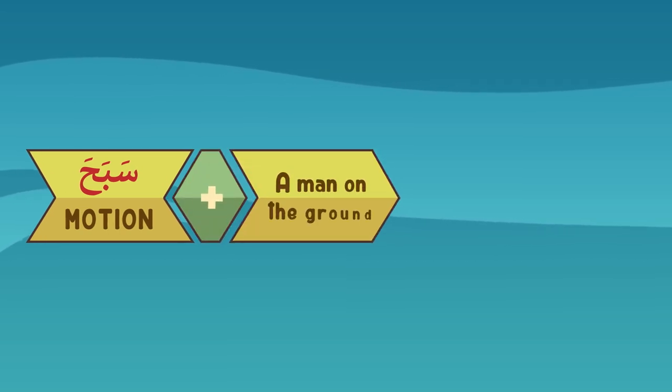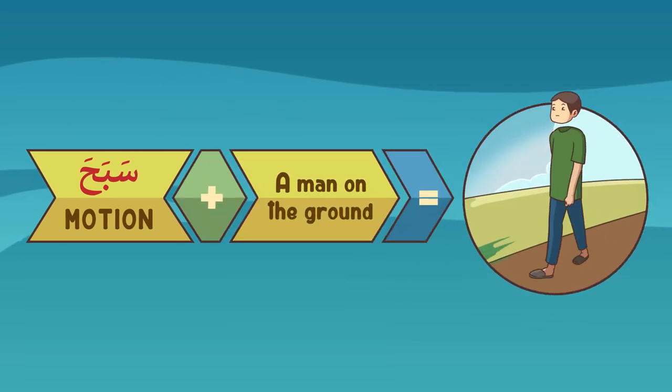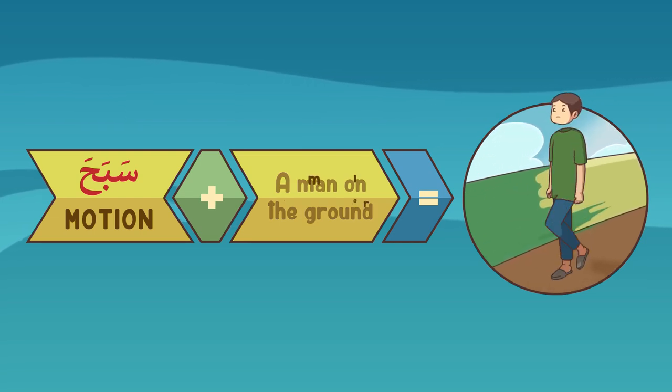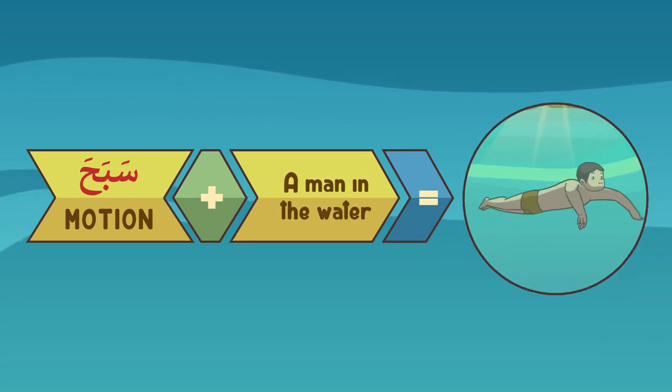If you use the word for a man on the ground, it would not mean that he is rolling, but would mean he is walking or running. If you use the word for a man in water, it would not mean that he is floating, but would mean that he is swimming.